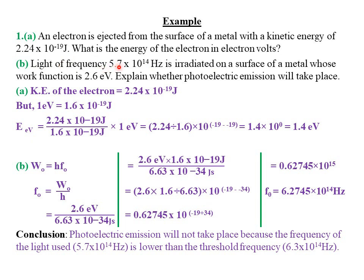Part B: light of frequency 5.7 × 10¹⁴ Hz is irradiated on a surface of a metal whose work function is 2.6 electron volts. Explain whether photoelectric emission will take place. This question tests the conditions for photoelectric emission. For photoelectric emission to take place, the frequency of the incident radiation must be equal to or greater than the threshold frequency. Alternatively, the energy of the incident radiation must be equal to or greater than the work function of the metal.